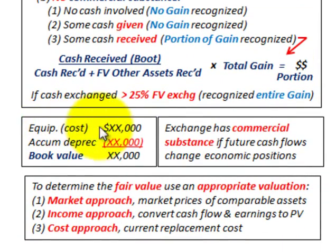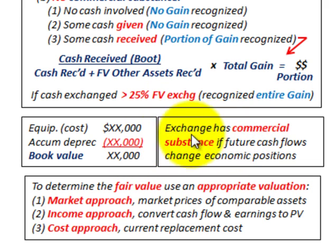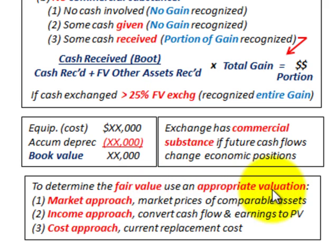To summarize: for book value, you take your equipment cost — what you paid for the equipment — and subtract accumulated depreciation to get the book value. The exchange has commercial substance if the future cash flows change economic positions — a technical definition, but understandable. To determine fair value, use the appropriate valuation approach: the market approach uses market prices of comparable assets; the income approach converts cash flows and earnings to present value; the cost approach uses current replacement costs.